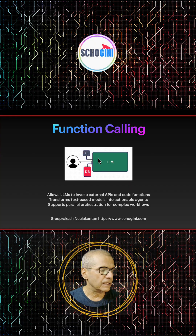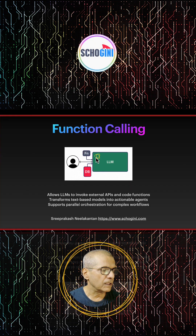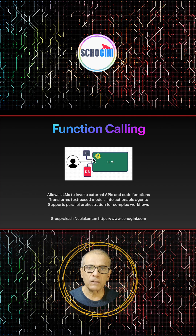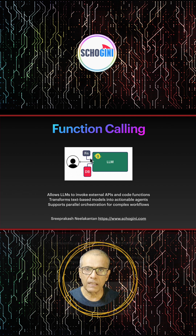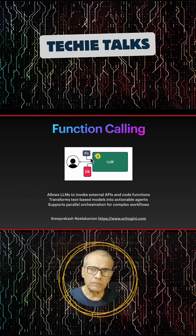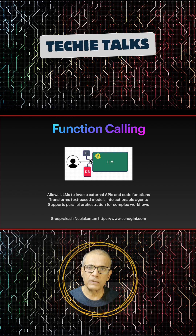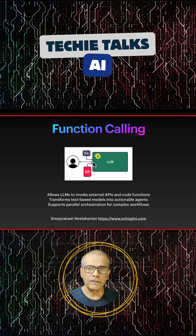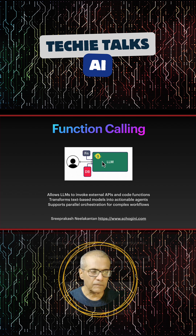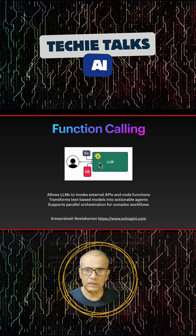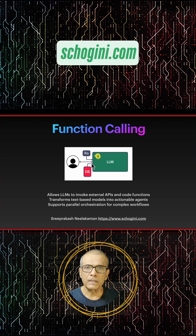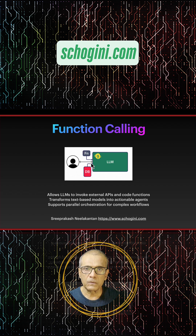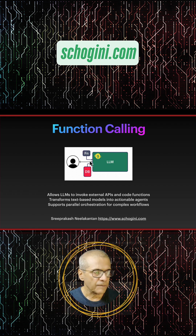The next thing that happened was the large language model started to offer function calling. Many people did not know what function calling was, and even now they don't really know, because many tools and agents started doing this in an implicit way. Function calling is a way of instructing the LLM that if it cannot handle a request, it can use some extra tools — and you inform the LLM about the tools available and the parameters those tools need.